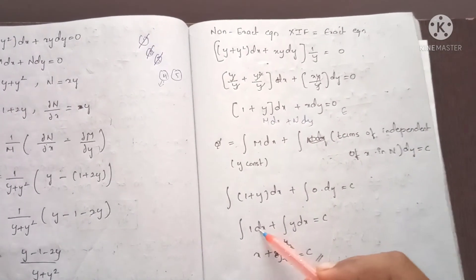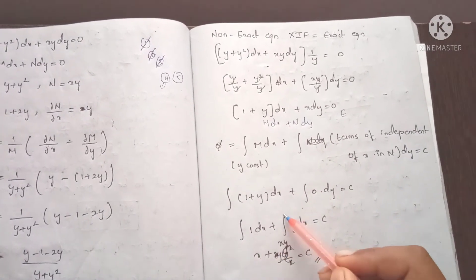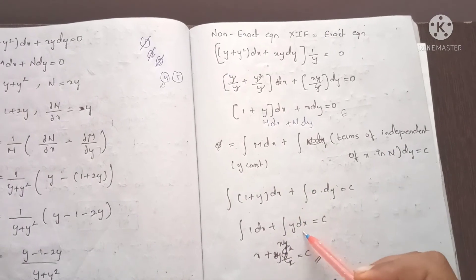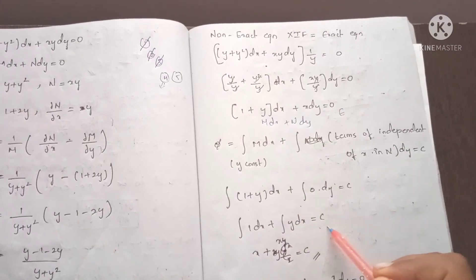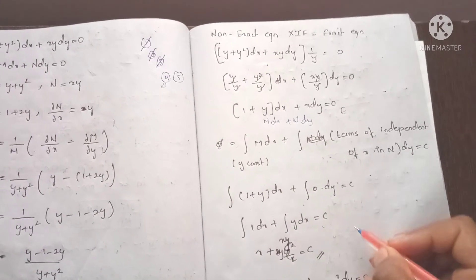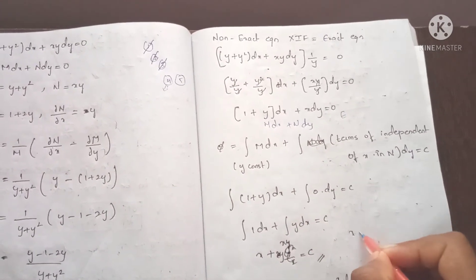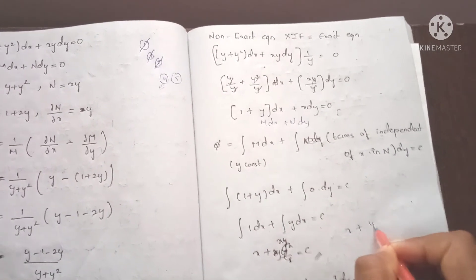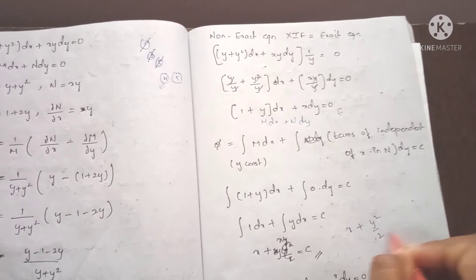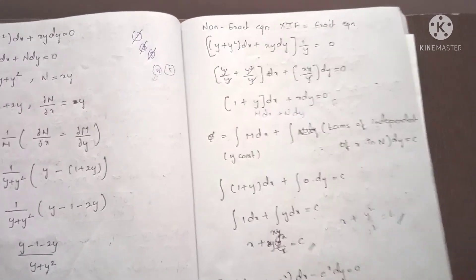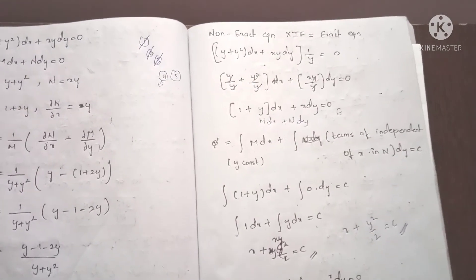The general solution formula is integration of M dx plus integration of terms independent of x in N dy equals to c. So integration of 1 dx plus integration of y dy equals to c, giving x plus y squared by 2 equals to c. This is the solution.